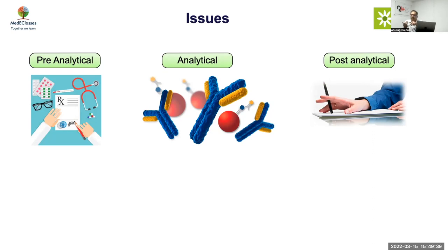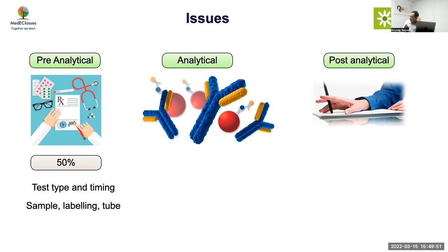Pre-analytical errors relate to which sample to use, when to collect it, which tube to use, which technique, and timing — all those things become important. About 50% of errors happen here. It could be the type of sample: whether you want to do TSH, T3, FT4, or T4. Timing also matters — doing it in the morning versus the night, and the sample type are all important.